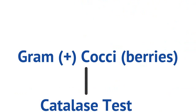So let's talk about gram-positive cocci. When we differentiate bacteria, not only can we differentiate them based on their staining properties, but also on their shapes. They can be differentiated into what's called cocci, or berry-like, or bacilli, which are rod-like. We will focus today's discussion on gram-positive cocci.